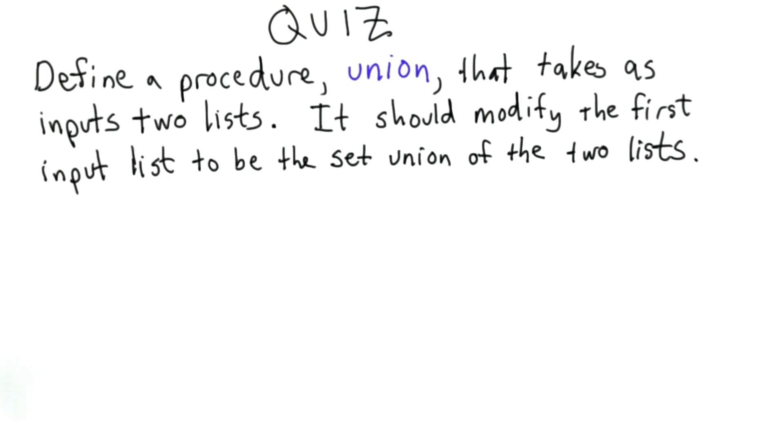So for this quiz, your goal is to define a procedure named union that takes two lists as its input. It should modify the value of the first input list, so when union returns, its value is now the union of the two input lists.